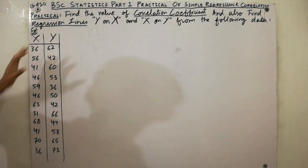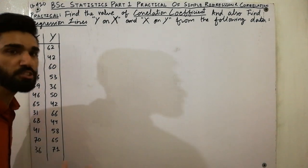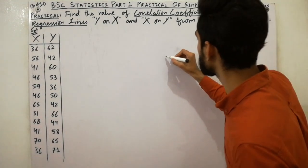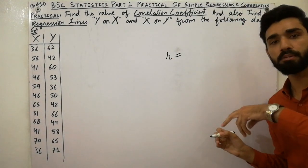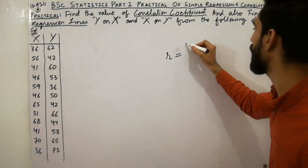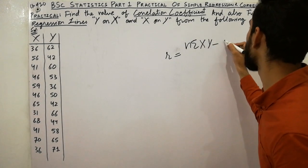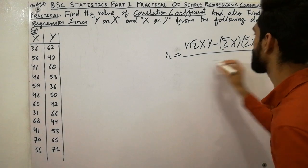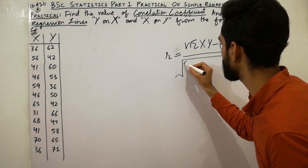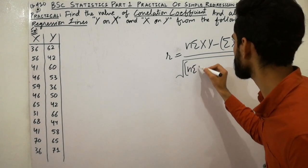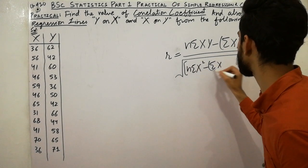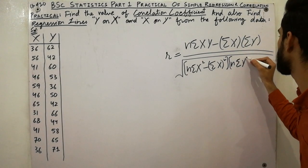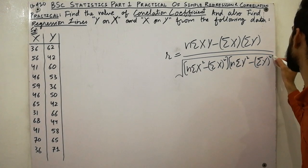Here is the data given, with x and y values. You have to first calculate the correlation coefficient, noted by small r. The formula of the correlation coefficient is: n·Σxy minus Σx·Σy, divided by the square root of the bracket n·Σx² minus (Σx)² multiplied by n·Σy² minus (Σy)².